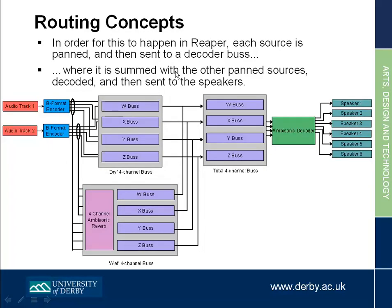We need a bit of background on the routing concepts for this demo. What goes into my panners is a mono feed — a single channel. What comes out of all my panners are four channels: the omni W and the three figure-of-eights — front/back, left/right, up/down. All of those will be sent to some summing bus. You might have a dry bus, you might have a reverb bus so you can do an aux-send reverb thing and change the balance. You might have multiple reverb buses. And then you'll have a total summing bus. This is very important because it's this track that you'll export as a four-channel WAV file to hand in — your entire 3D mix contained within four channels, with no loss of quality.